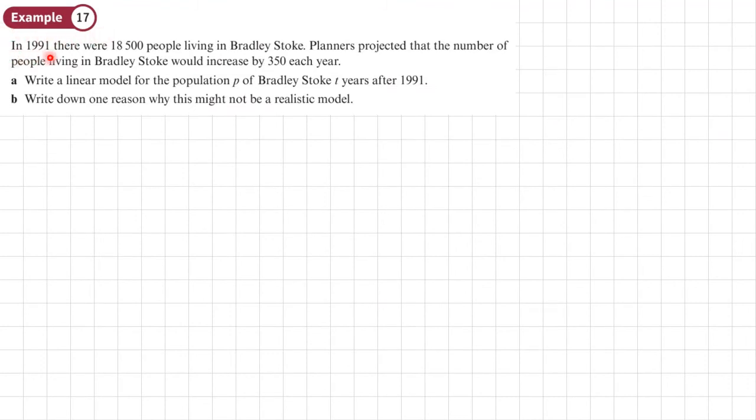Example 17. In 1991, there were 18,500 people living in Bradley Stoke. Planners projected that the number of people living in Bradley Stoke would increase by 350 each year. Part A, write a linear model for the population P of Bradley Stoke T years after 1991.